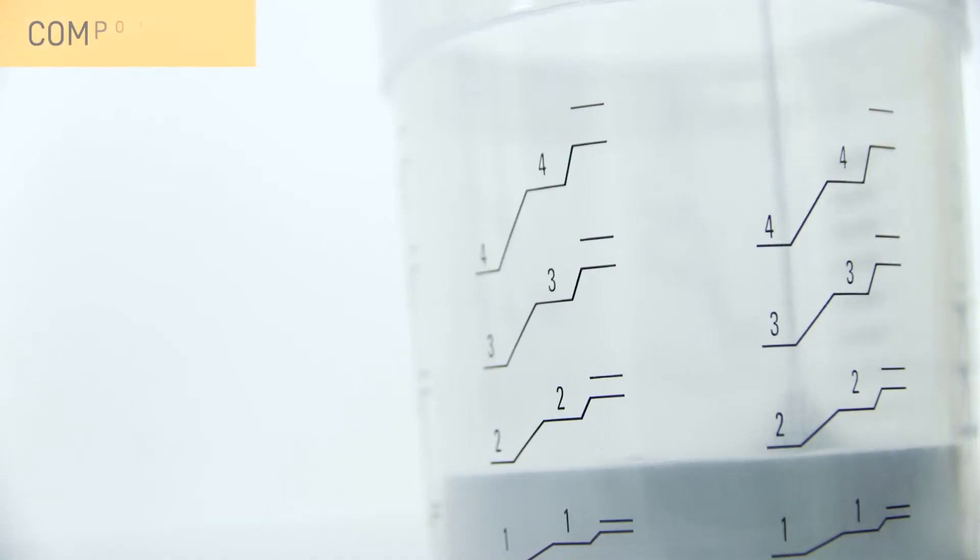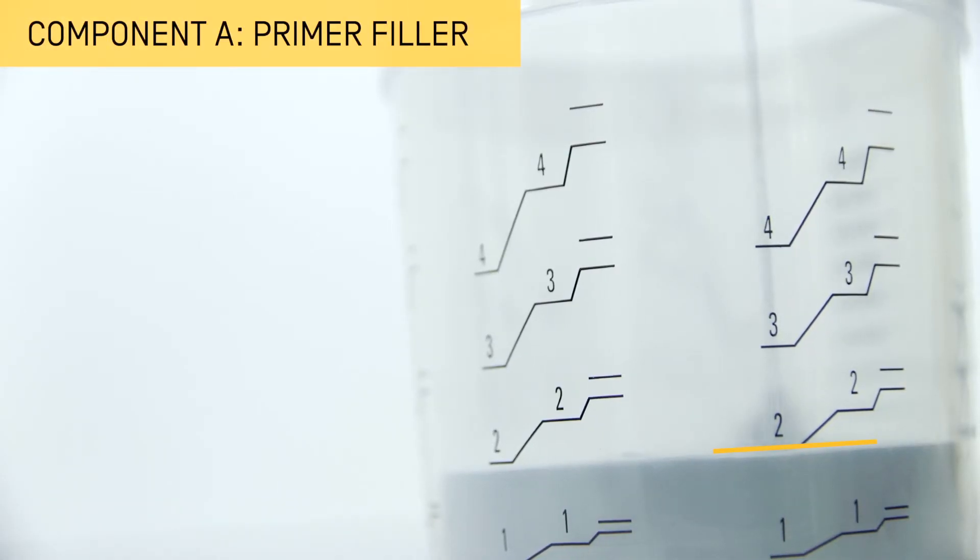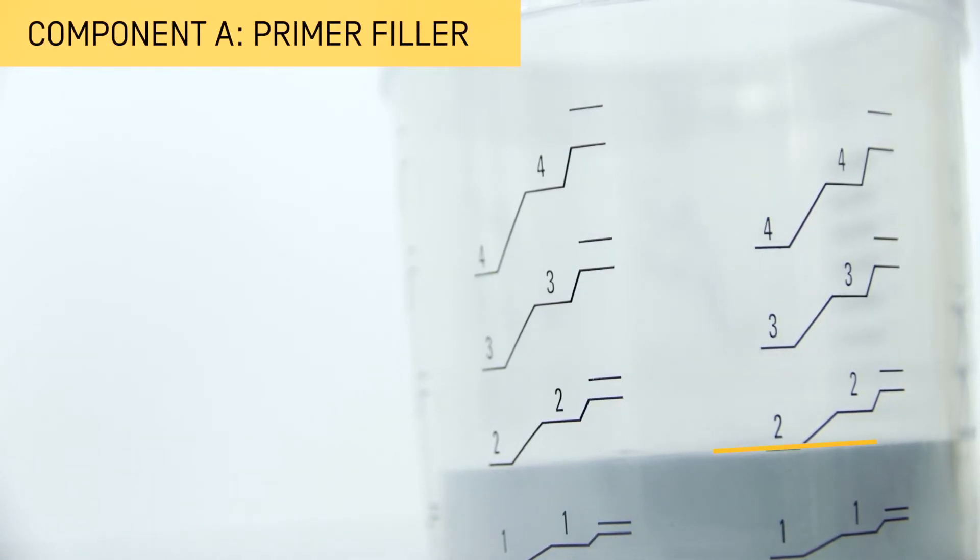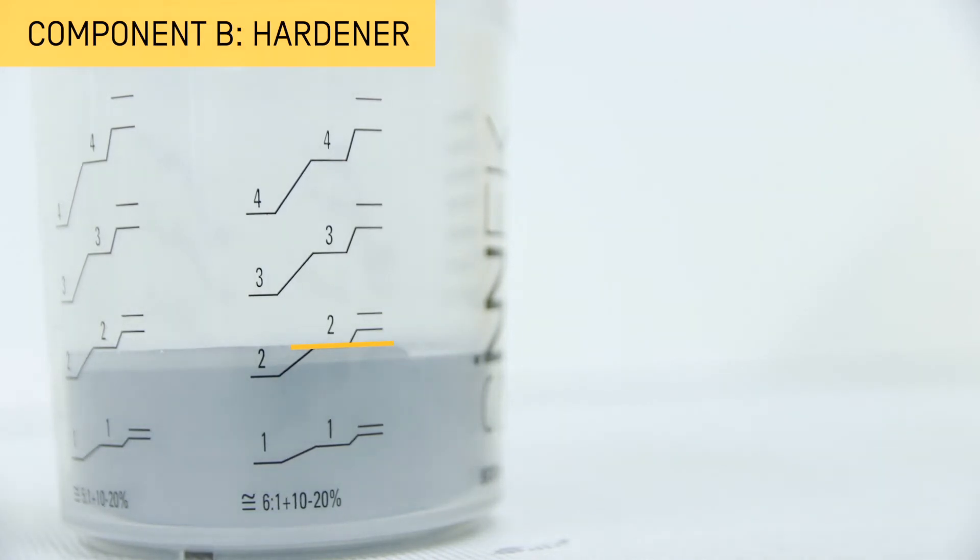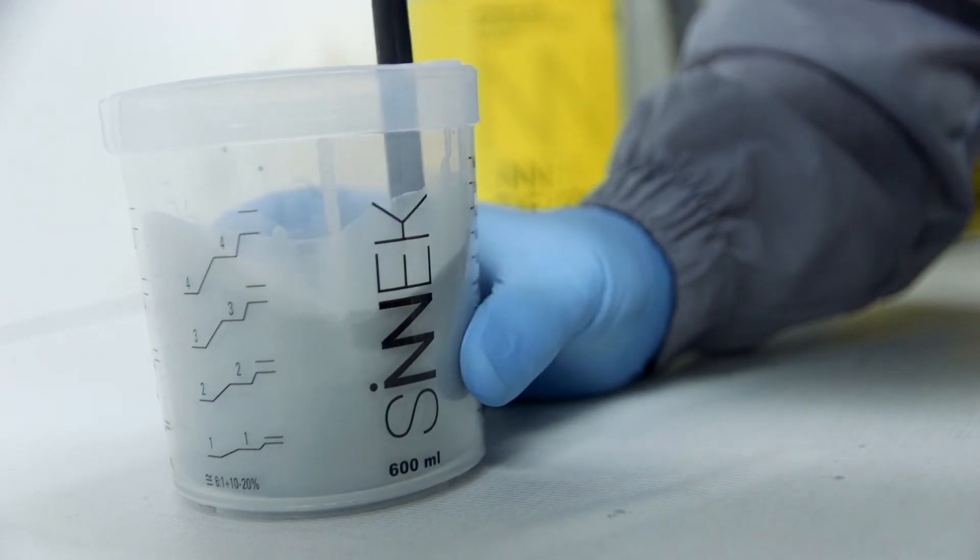Pour component A to the corresponding mark on the measuring cup. Pour in component B, the hardener. Stir the mixture with a rod until you obtain a regular and uniform mixture.